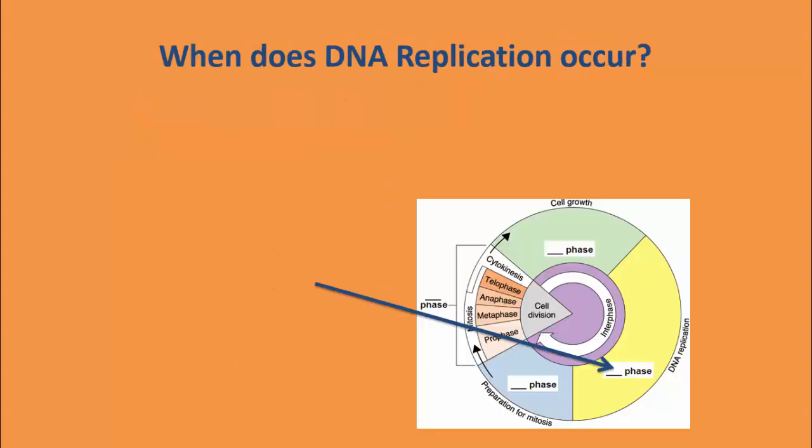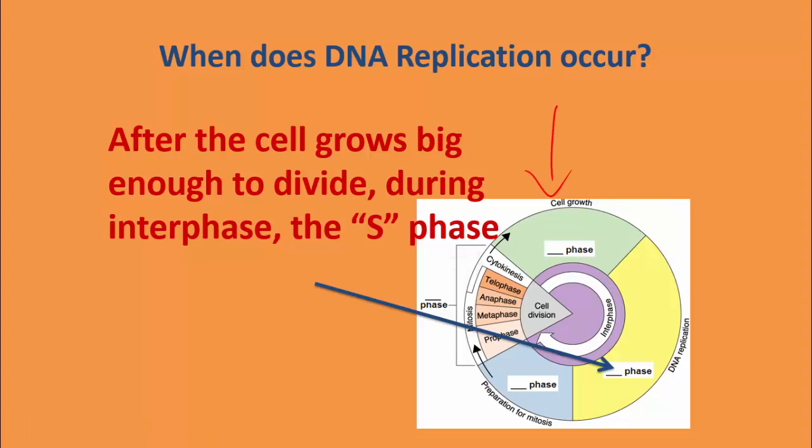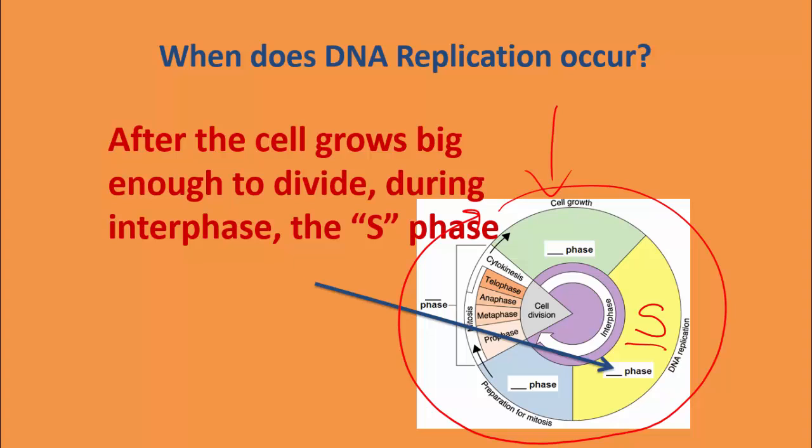So when does DNA replication occur? If you look at this image of the cell cycle, don't get too intimidated because we'll go through that in detail in a future lesson. DNA replication occurs in the S phase — this yellow phase in the diagram. The only phase you need to worry about right now is the S phase — that is the DNA replication phase.